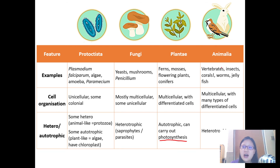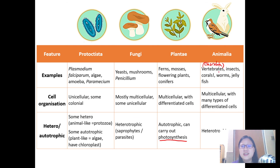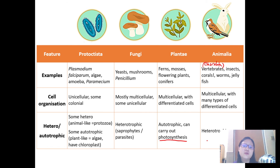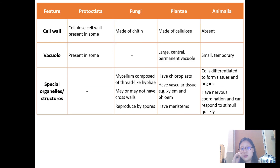Last but not least, Animalia — the animal kingdom. Think of vertebrates (Chordata — animals with spinal cords), insects, worms, jellyfish, and even corals, which are considered animals. Animals are multicellular with many types of differentiated cells. The key difference is that they are heterotrophic — they do not produce their own food and cannot carry out photosynthesis.